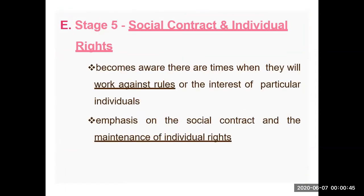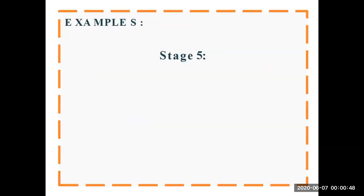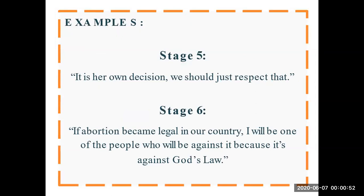For the social contract and individual rights example: if you cannot agree with a particular rule or regulation, you can go against it and say it is not your opinion — your individual rights are strong at this stage, and people will respect your decision. For the universal principles example: if abortion becomes legal in our country, one might say, 'I will be one of the people who is against it, because it is against God's law.' According to universal law, abortion is considered wrong, and even if your country's law says it is legal, your ethics lead you to support the universal principle that abortion is not right.